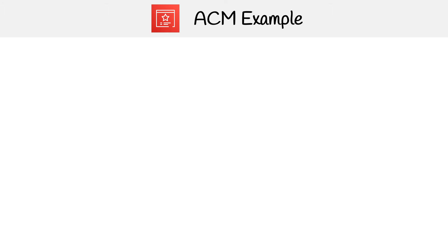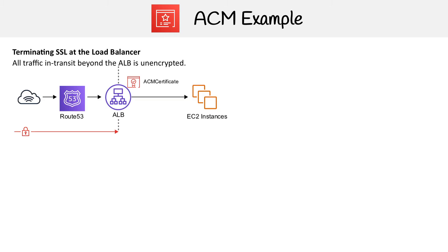We're going to look at a couple of ACM examples, and the point of this is to understand SSL termination. The first example is where we're using ACM and attaching that certificate to our load balancer, which is an Application Load Balancer.